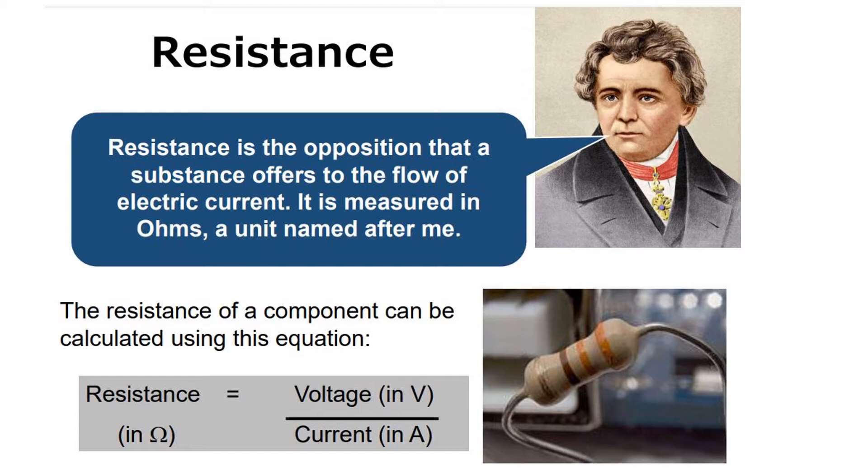There are components called resistors which have a fixed value of resistance. There's one shown in the picture here and the color of the bands help you to work out what value of resistor you've got in front of you. Essentially this equation is true for any component and under any circumstances you could do a calculation of resistance.